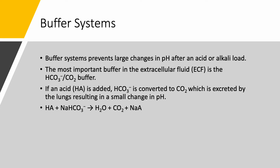What about buffer systems? Buffer systems prevent large changes in pH after an acid load or alkali load. The most important buffer in the extracellular fluid is the bicarb-CO2 buffer. If we add an acid HA, the buffer reacts: bicarb gets converted to CO2, which is blown off by the lungs, and the pH changes much less than if the buffer weren't present. When we combine HA with sodium bicarbonate, we get water, CO2 blown off by the lungs, and a salt — this way we avert a big problem.